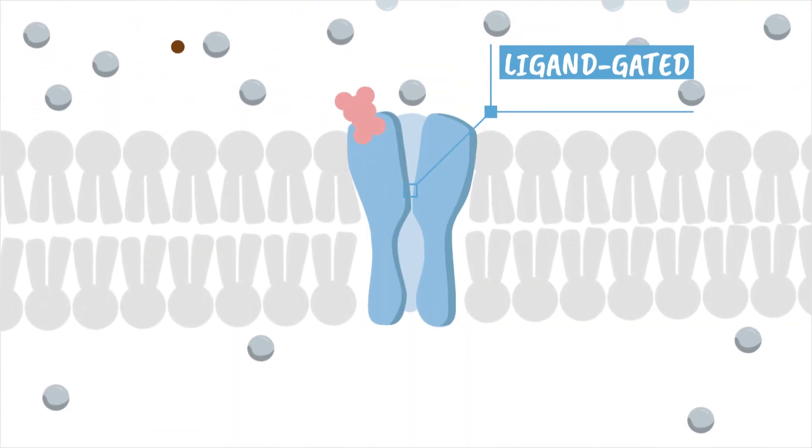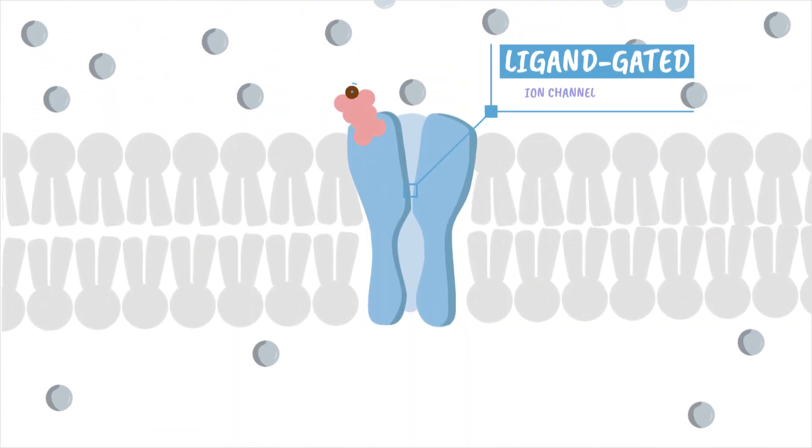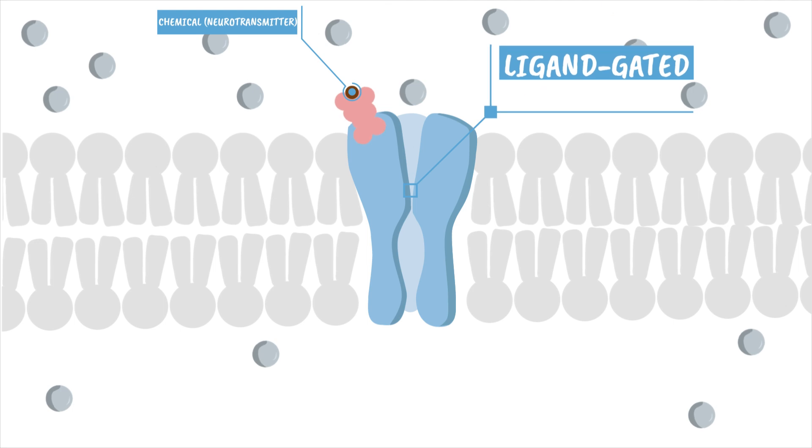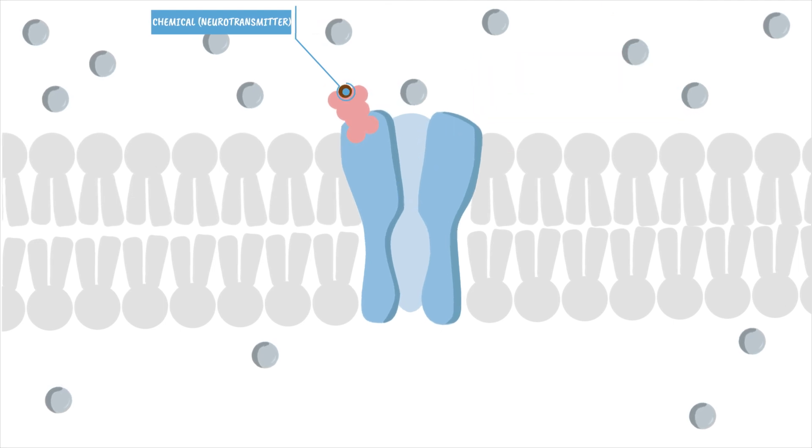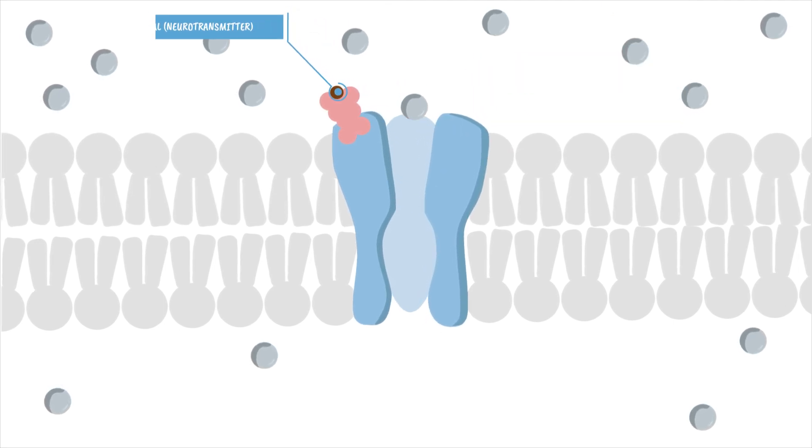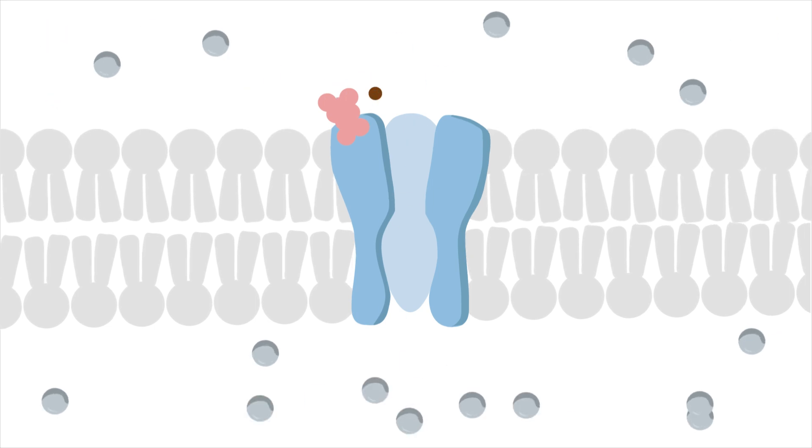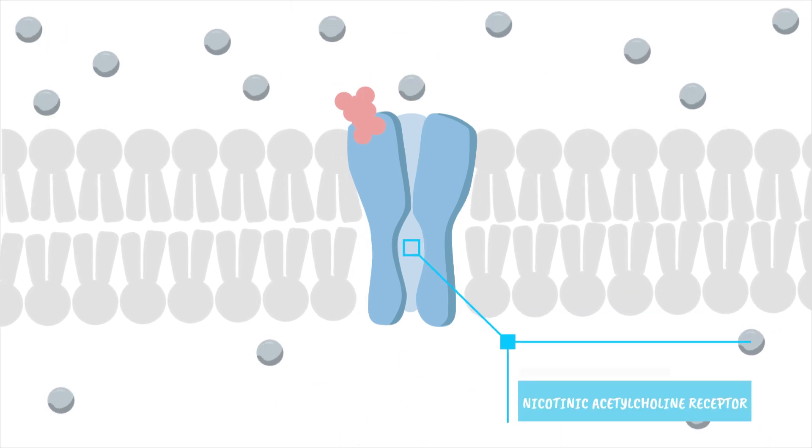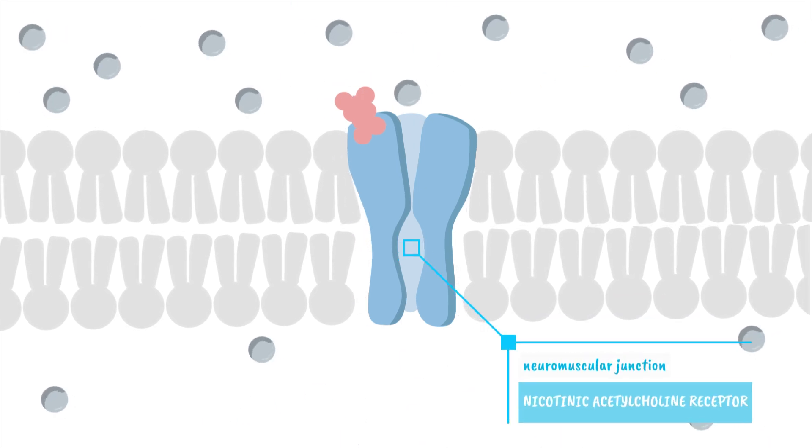First up are ligand-gated channels. These open or close when a chemical, like a neurotransmitter, binds to them. That binding causes the channel to change shape and either allow or stop the flow of ions. A good example is the nicotinic acetylcholine receptor at the neuromuscular junction.